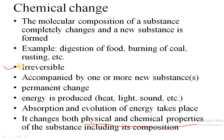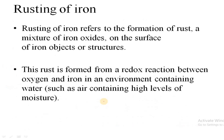Chemical change is a permanent change — under normal conditions, we cannot revert it back to the original form. In this type of change, energy is generally produced in the form of light, heat, or sound. This type of reaction takes place by absorption or evolution of energy. That's all about chemical change. Now let's go to the rusting of iron.